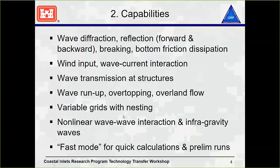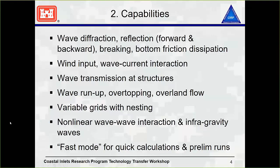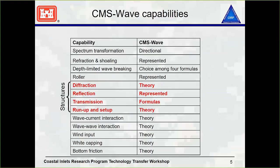Variable grids: you can have a large wave grid and a smaller wave grid, or a series of smaller wave grids, depending on your area. You don't necessarily want a lot of computational cells everywhere, so that's one way we can run a larger grid and then use some of those results to force a smaller grid. There's also a fast mode for doing faster calculations, which goes into how that's done in the code.